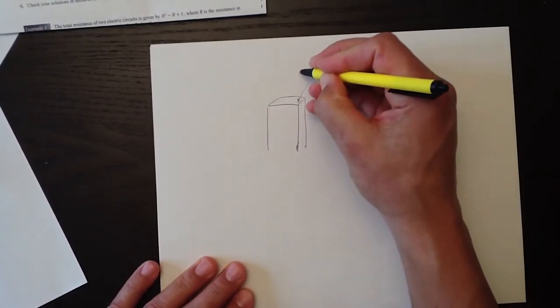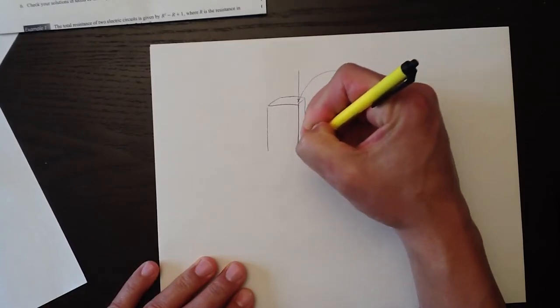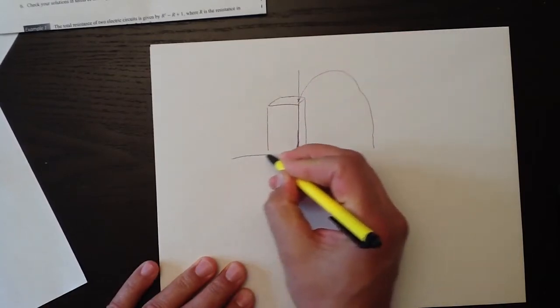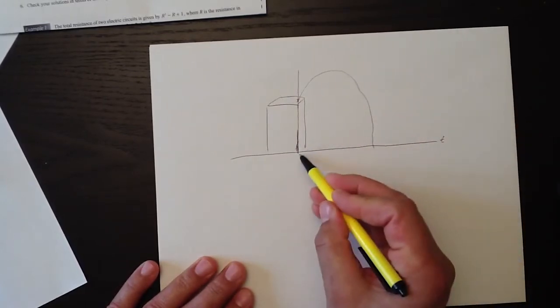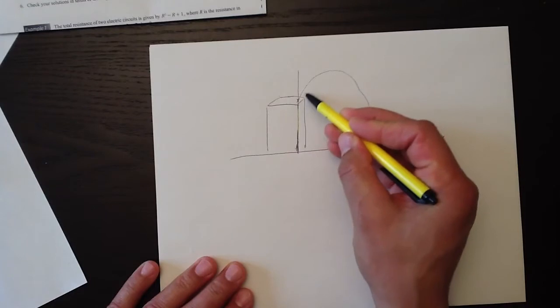So if we were to draw an axis here, we would know that the ground is there, the ground is zero, and that'll be t. And as time marches on, the ball follows its path.